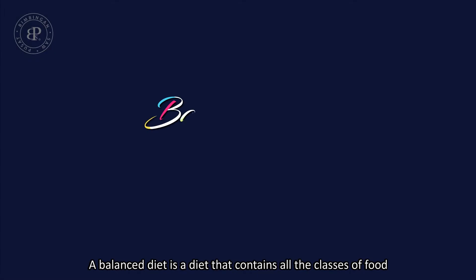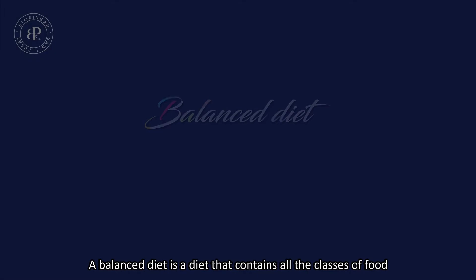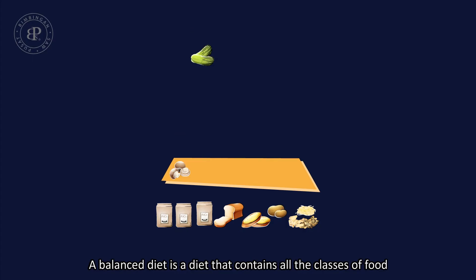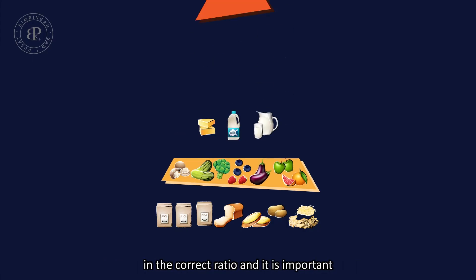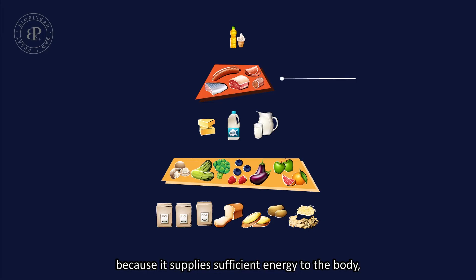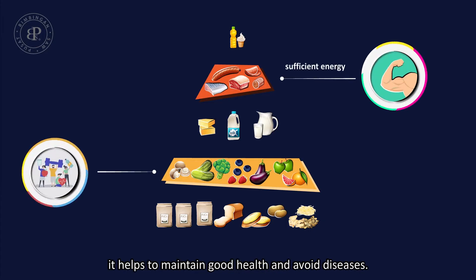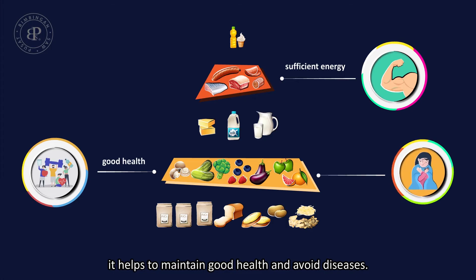A balanced diet is a diet that contains all the classes of food in the correct ratio. It is important because it supplies sufficient energy to the body, helps to maintain good health, and avoid diseases.